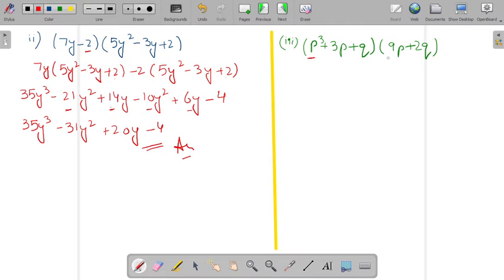First term with all the binomial. Second term with all the binomial. Third term multiply with all the binomial. So it hardly makes any difference. You will get the answer same.